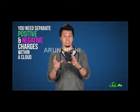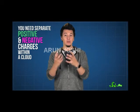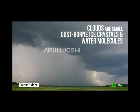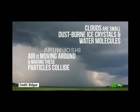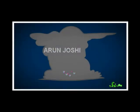To have a lightning strike, you first need to separate positive and negative charges within a cloud. Clouds are essentially a bunch of really small dust-borne ice crystals and water molecules. During a storm, the air is moving around and making these particles collide. So one theory is that some negatively charged electrons from the upward-moving water molecules get transferred to the downward-moving, heavier particles. This makes the bottom of the storm cloud more negatively charged and the top of the storm cloud more positively charged.